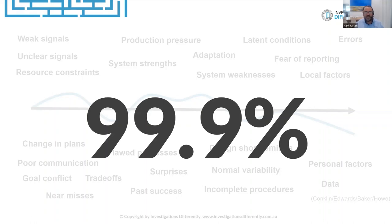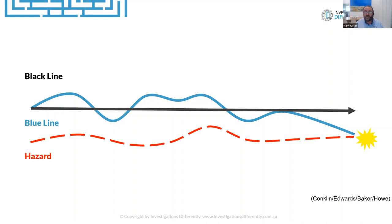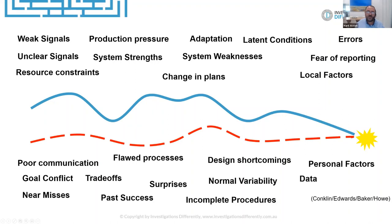That's what we want to learn about: normal work. We have our 99.9% of the time where everything's fine, and then occasionally that 0.1% — rough math — when we intersect with a hazard or drift into failure and hit a hazard. That's when we suddenly want to learn what happened, but we forget about the blue line and we only compare it to the black line. If we really want to know where the systemic issues are, they're the issues occurring all the time regardless of whether we have an incident or not. The incident is just a trigger.